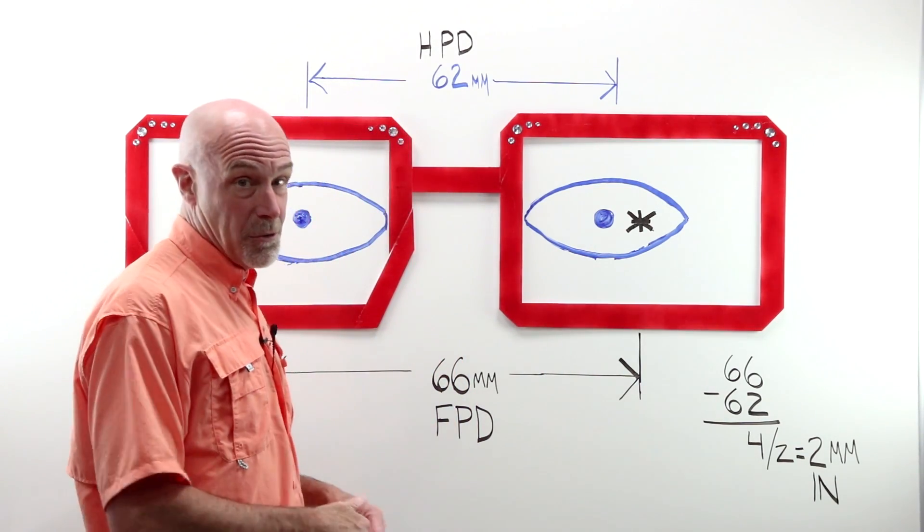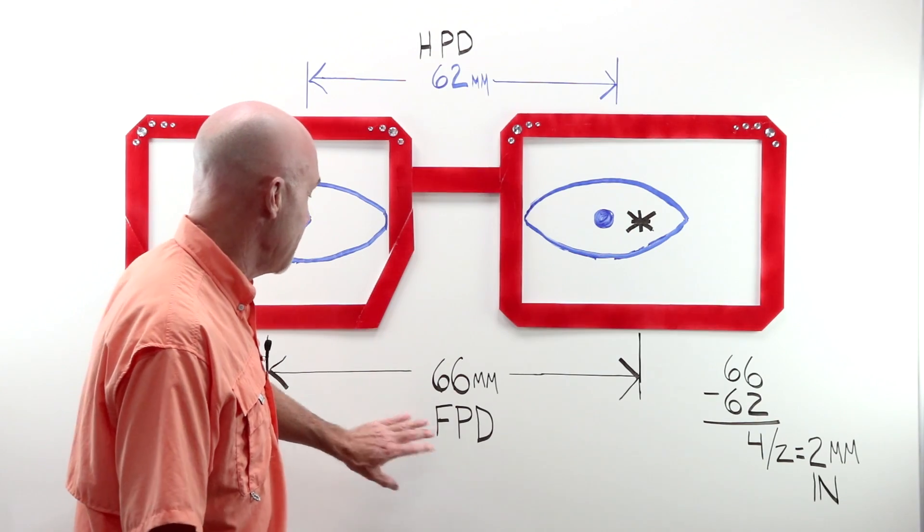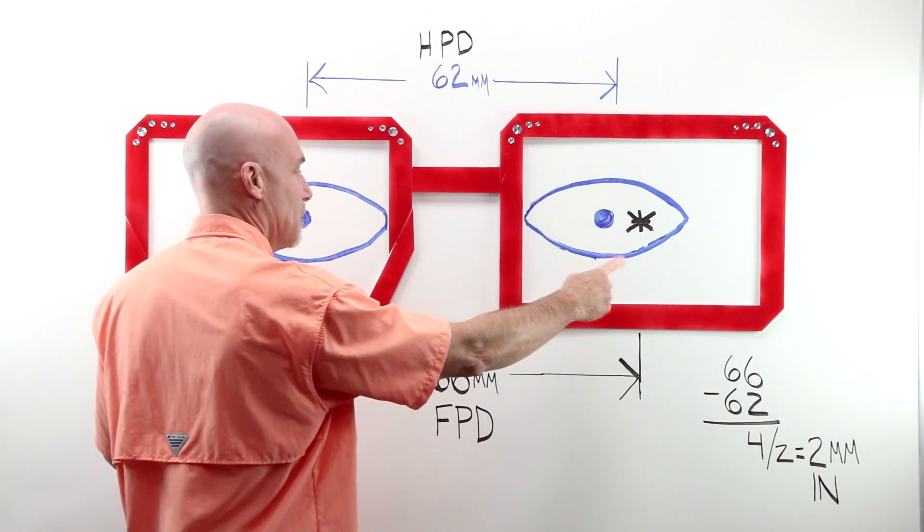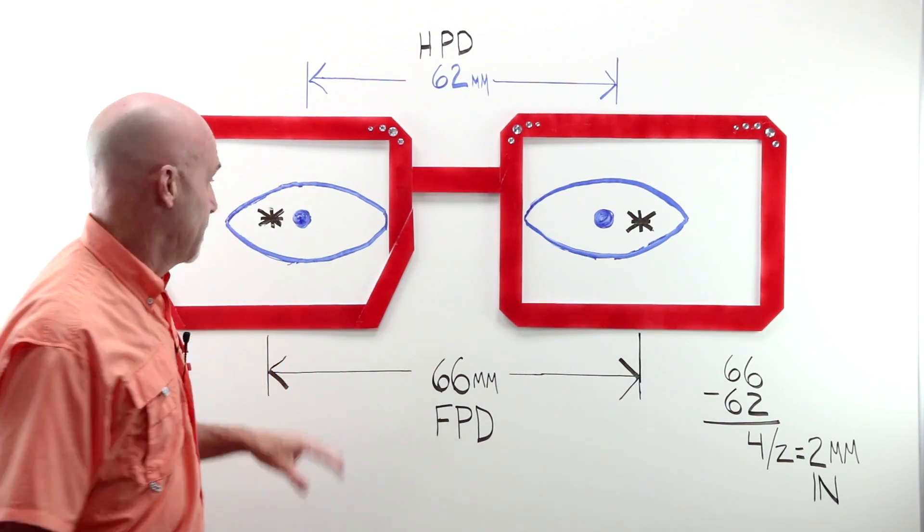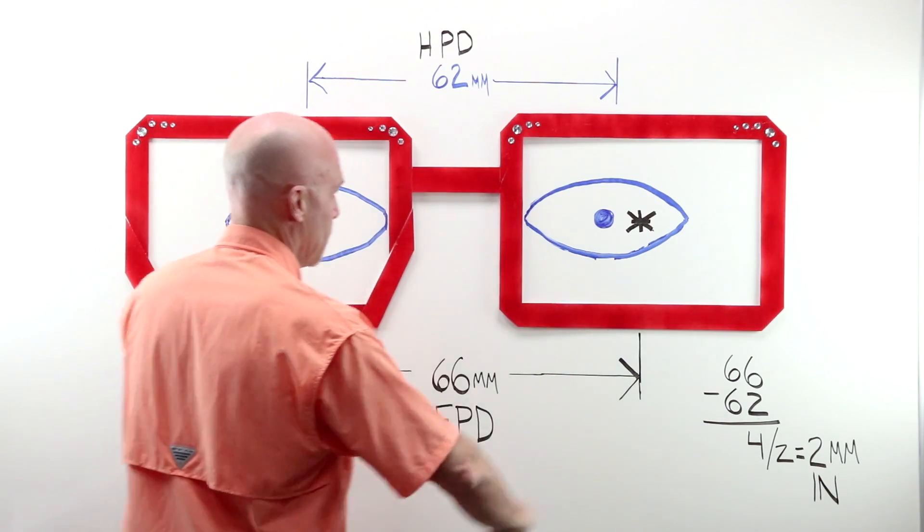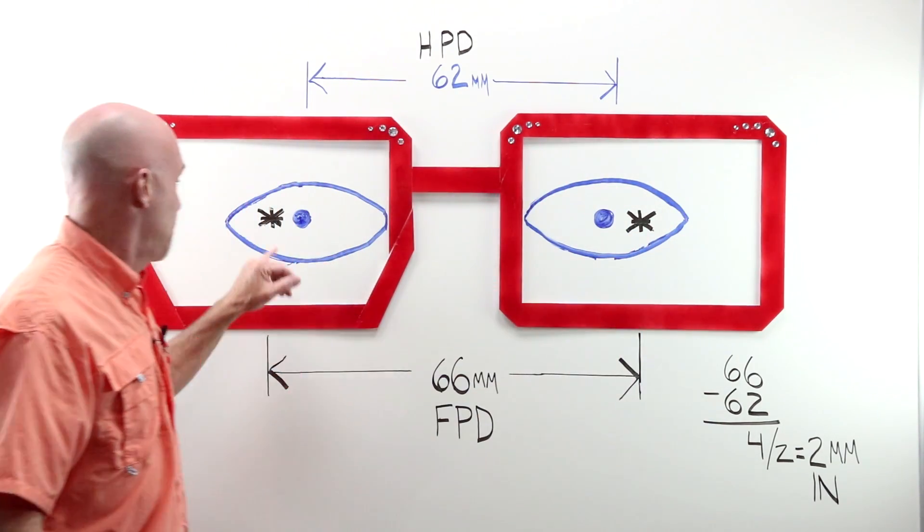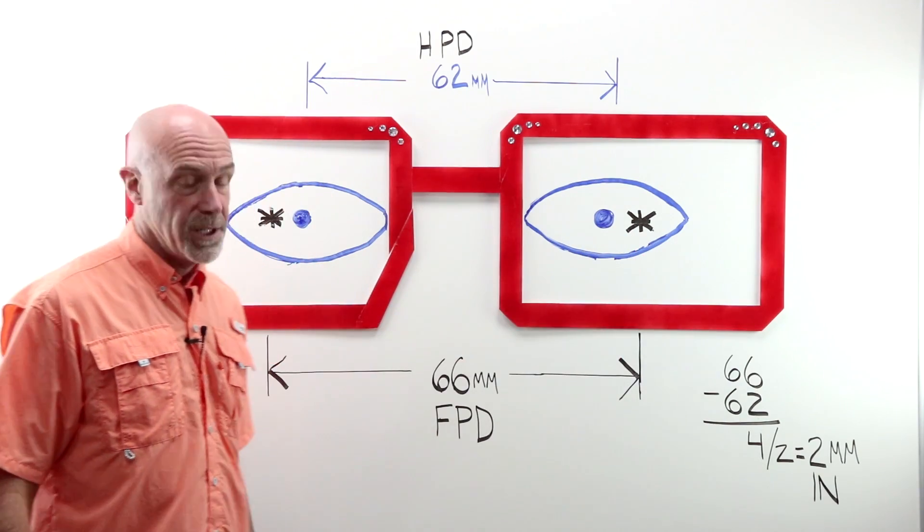And of course, plenty on the website. Your frame PD is equal to the geometric center of the eye wire openings. The center of this opening to the center of this opening, represented by the two black asterisks.